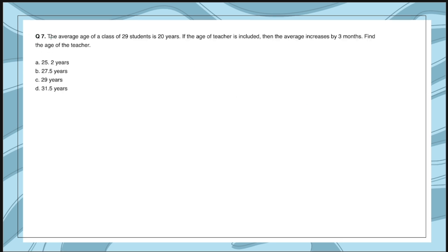Let's take the next question. The average age of a class of 29 students is 20 years. If the age of the teacher is included, the average increases by 3 months. Find the age of the teacher. We will apply the same formula. Step one is to find the total age of 29 students.